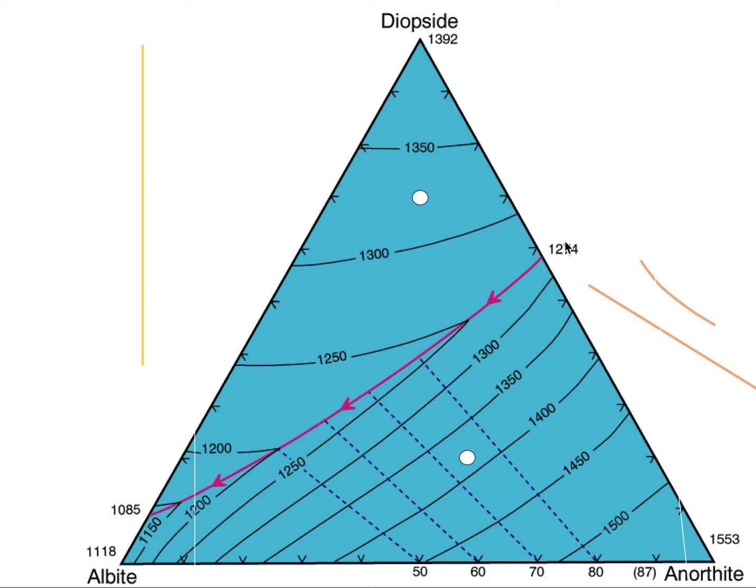Remember that if you go back and look at that video, you might recall that the eutectic temperature is at 1274 degrees centigrade, pure diopside melts at 1392, and pure anorthite melts at 1553.